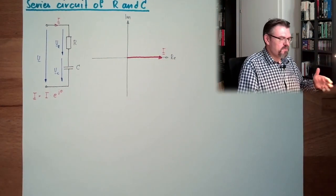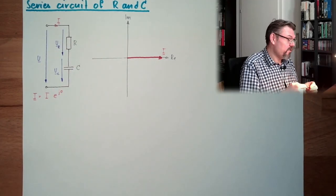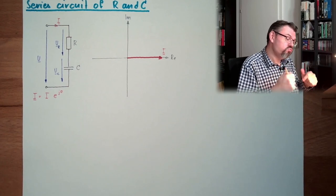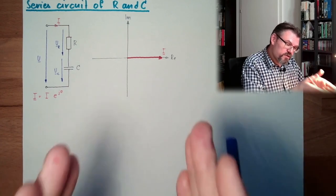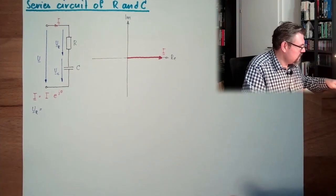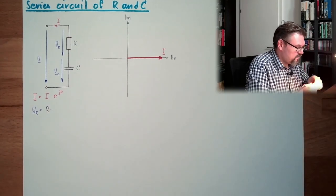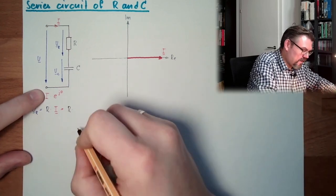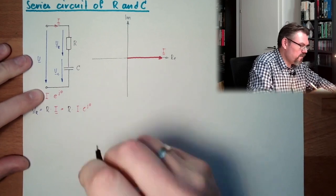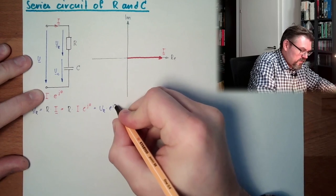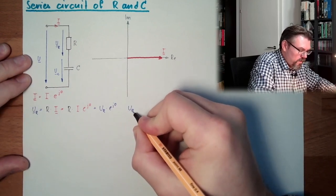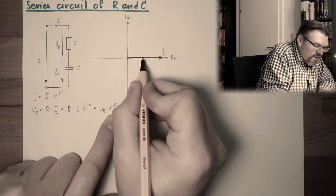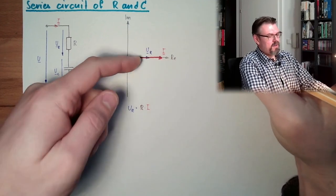It has a certain length. This is my complex representation of my current. I can select it, so my current is going in this direction. Here is my current I. I can select simply the angle. I could have selected the current in another angle. But like I said, I'm not my own enemy.